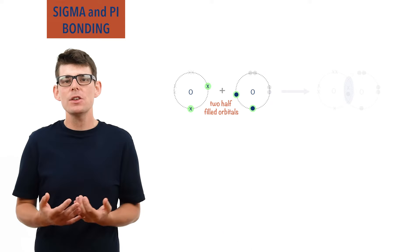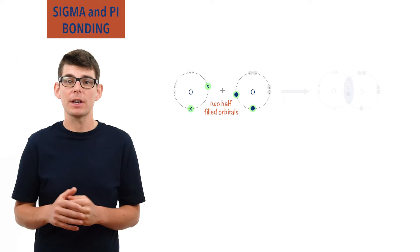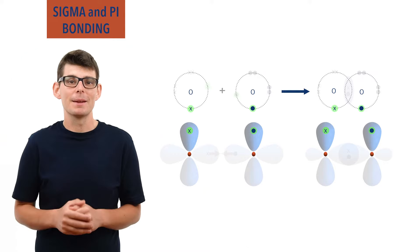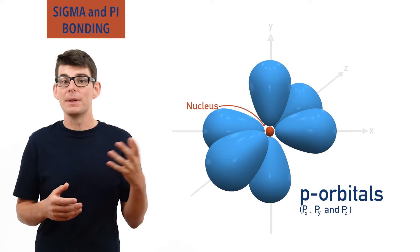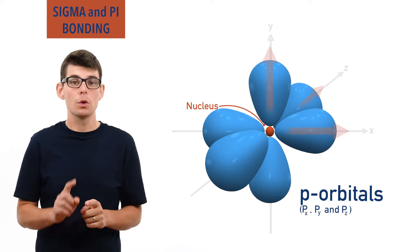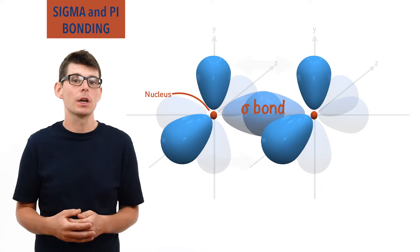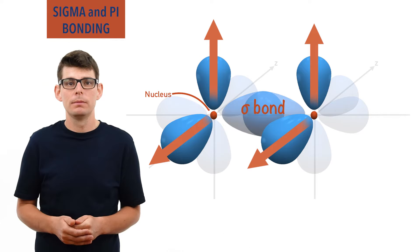Before the oxygen atoms formed a sigma bond, they each had two half-filled P-orbitals. The sigma bond was formed from the direct overlap of one of these from each atom, meaning each oxygen atom still has a half-filled P-orbital and wants to form another bond. There are three P-shaped orbitals around the nucleus — P-X, P-Y, and P-Z — and their lobes are each pointing in different directions, all 90 degrees to each other. If two half-filled P-orbitals overlap fully to form a sigma bond, the half-filled orbitals left over cannot directly line up or overlap — they are simply pointing in the wrong direction.